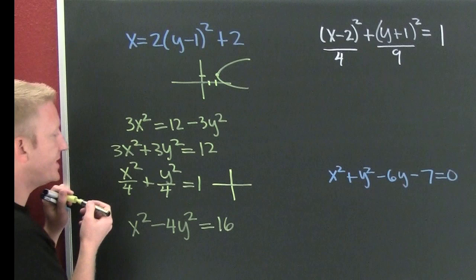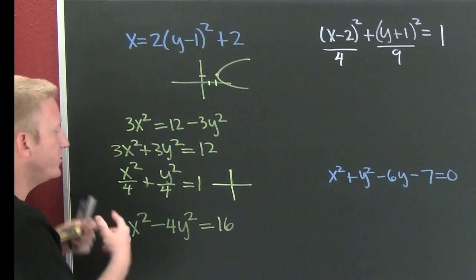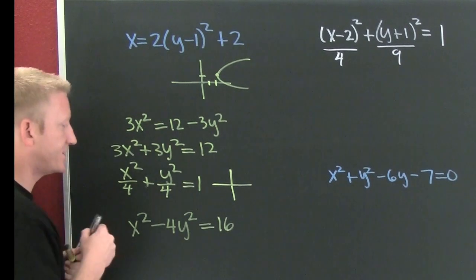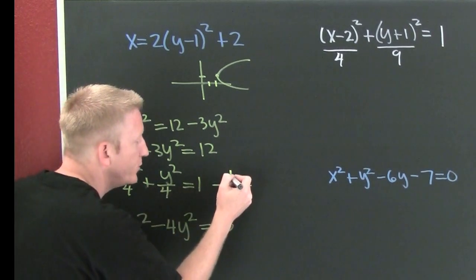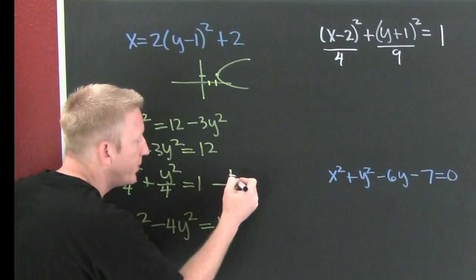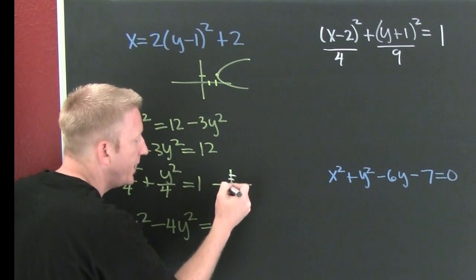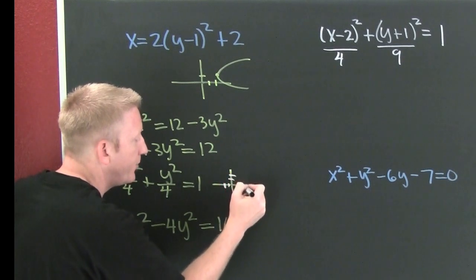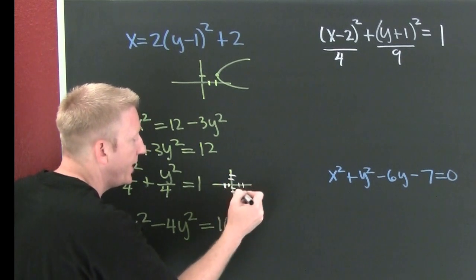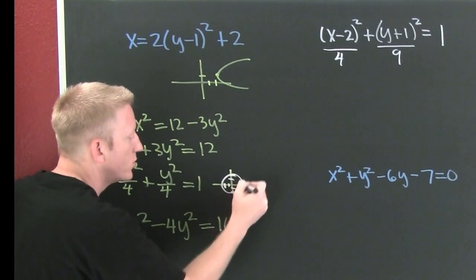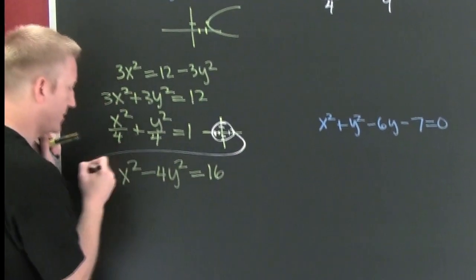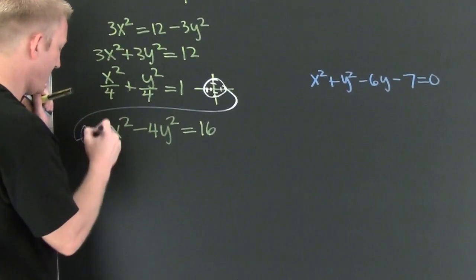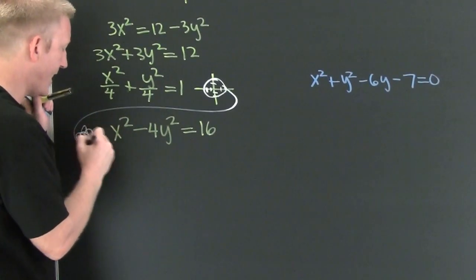Whose center is at the origin, whose radius is 2. Bam, bam, bam, bam, bam. Nice. And flower.